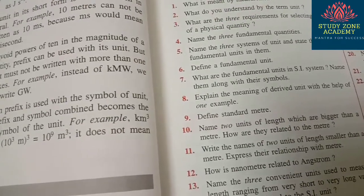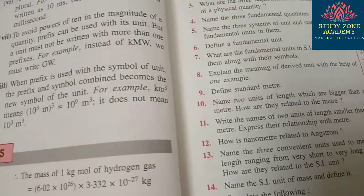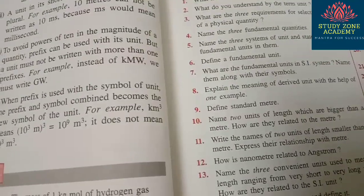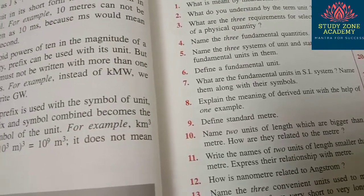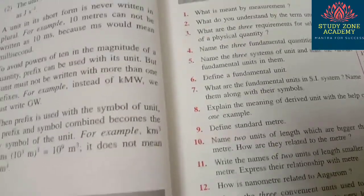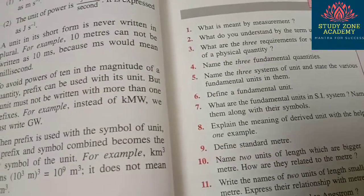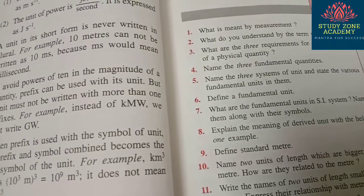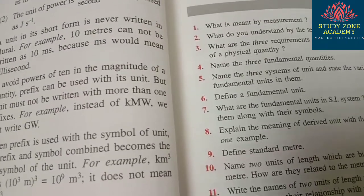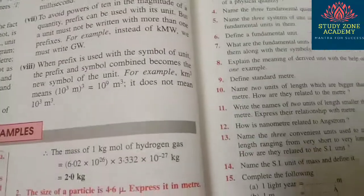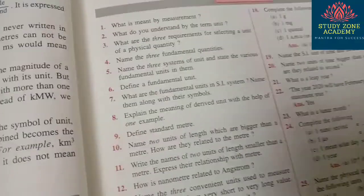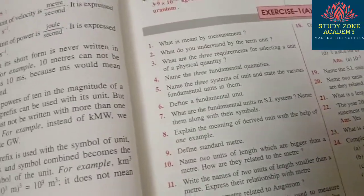Next question: the mass of a molecule of hydrogen is 3.332 × 10⁻²⁷ kg — find the mass of 1 kg mole of hydrogen gas. Next: the size of a particle is 4.6 μm — express it in meters, where μ means micrometer.